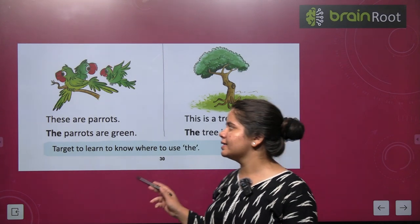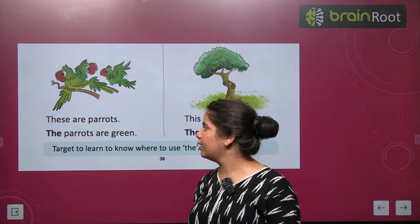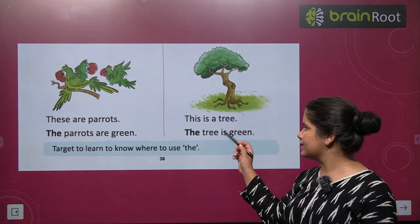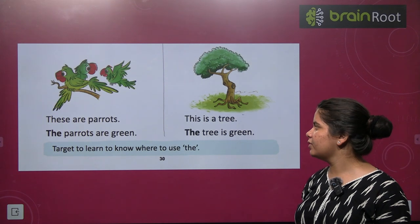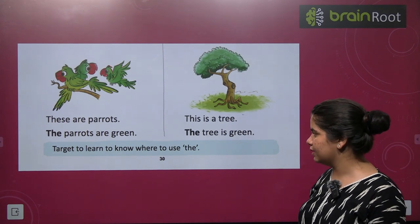These are parrots. The parrots are green. This is a tree. The tree is green.